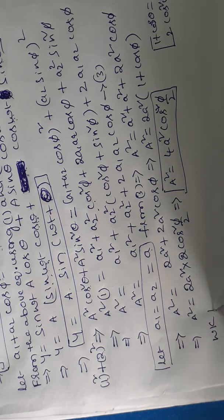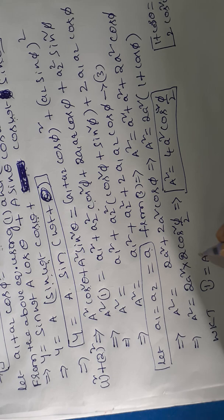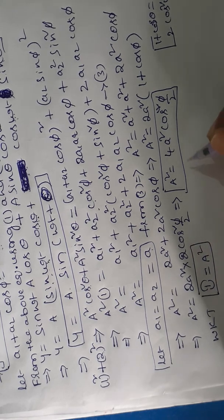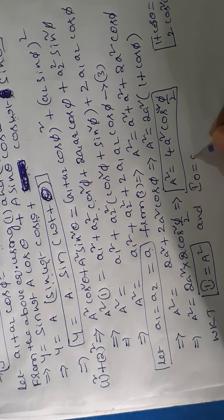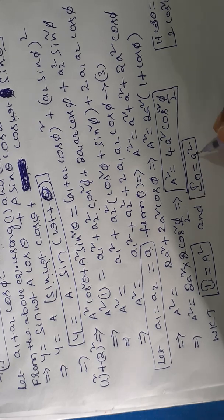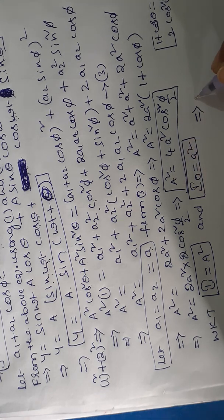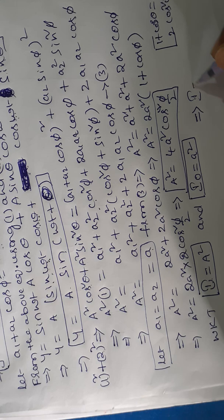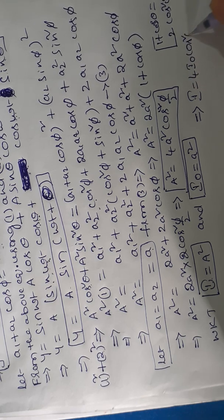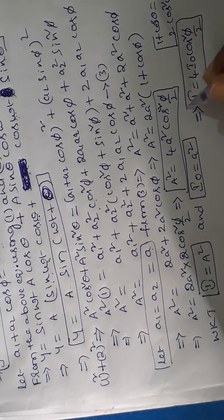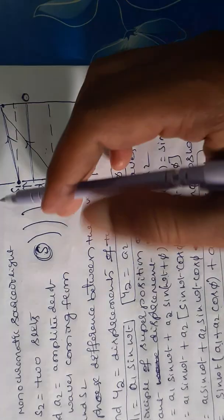We know that the intensity of the resultant wave I = A² (intensity is proportional to the square of amplitude), and the intensity of the individual wave I₀ = a². Therefore, the intensity at a point where interference occurs is: I = 4·I₀·cos²(φ/2). This is the key expression for intensity at a point where interference occurs.